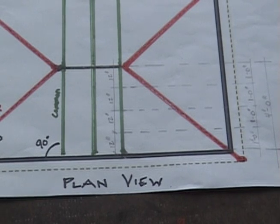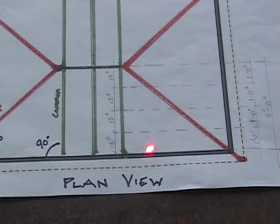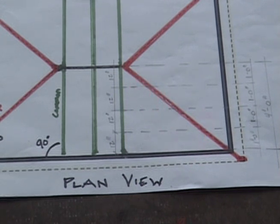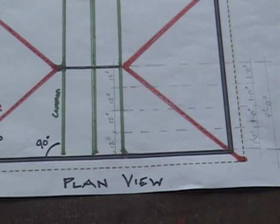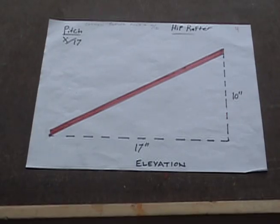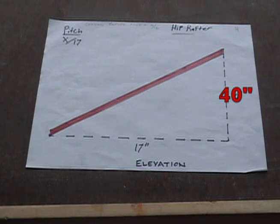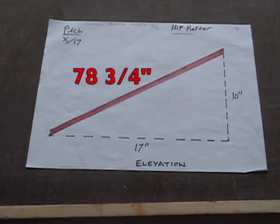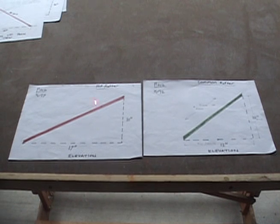Using that information, we can determine the length of board needed to make our hip rafter shown in red. We see that the run length of the bottom member of the hip rafter is 4 units of 17 inches, or 68 inches. The height or rise of the rafter is 4 times 10 inches, or 40 inches — just like our common rafter. So using the Pythagorean theorem, the length of the sloped member works out to be 78 and 3 quarter inches. This proves that hip and valley rafters are longer than common rafters, because the common rafter was only 62 and a half inches.